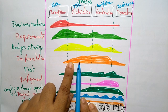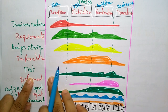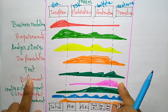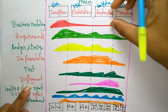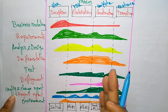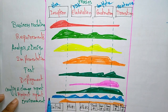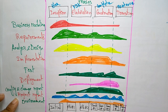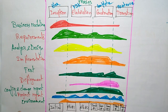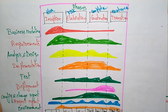Implementation starts at the second phase — Elaboration — and continues through Construction and Transition. Testing starts with the idea in Inception and continues up to Transition. Deployment occurs at the Construction and Transition stages. Configuration and change management occur from Elaboration through the maintenance phase. Project management is involved from Inception all the way through Transition, and the environment is established at the very beginning of the Inception phase.